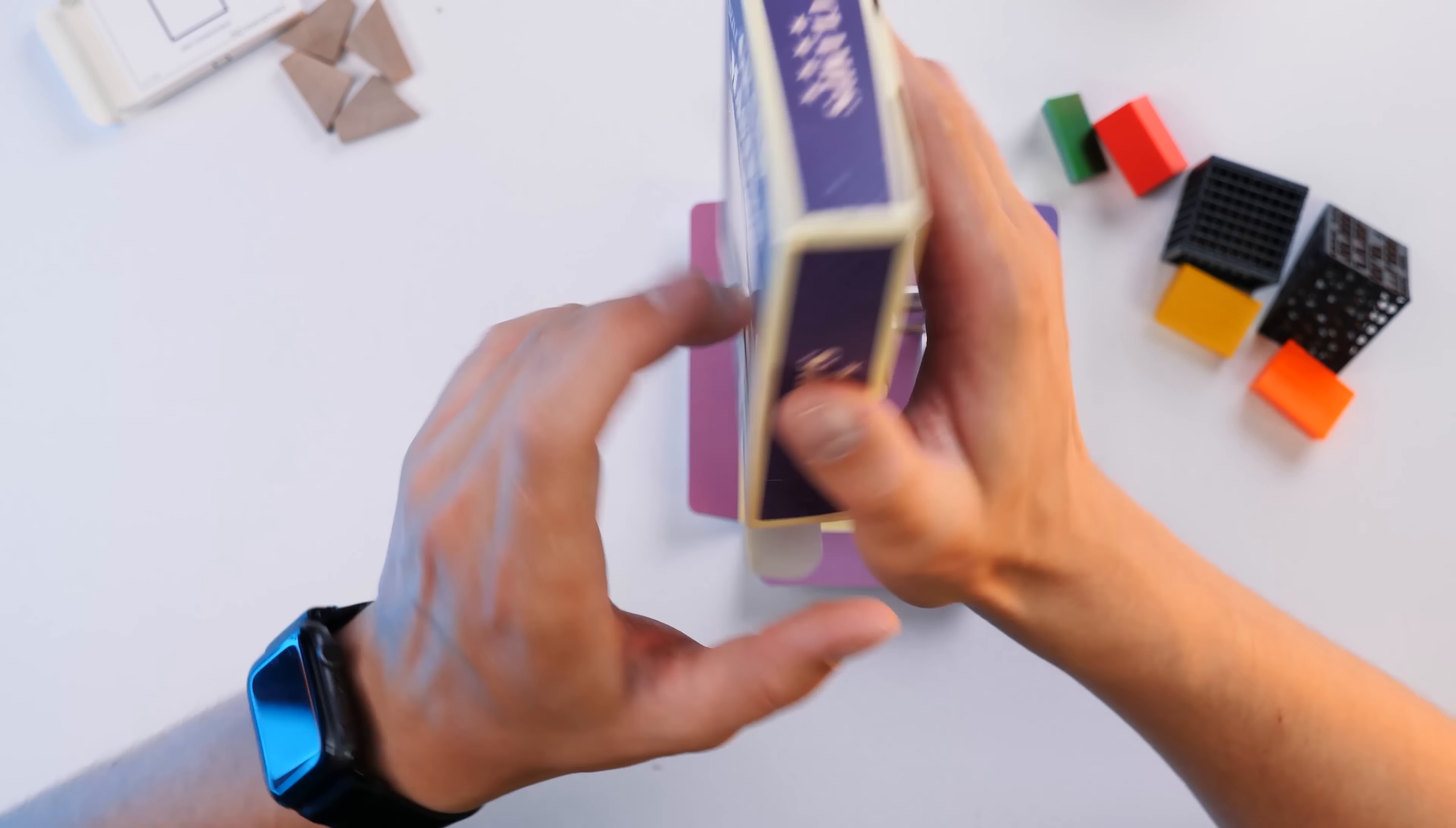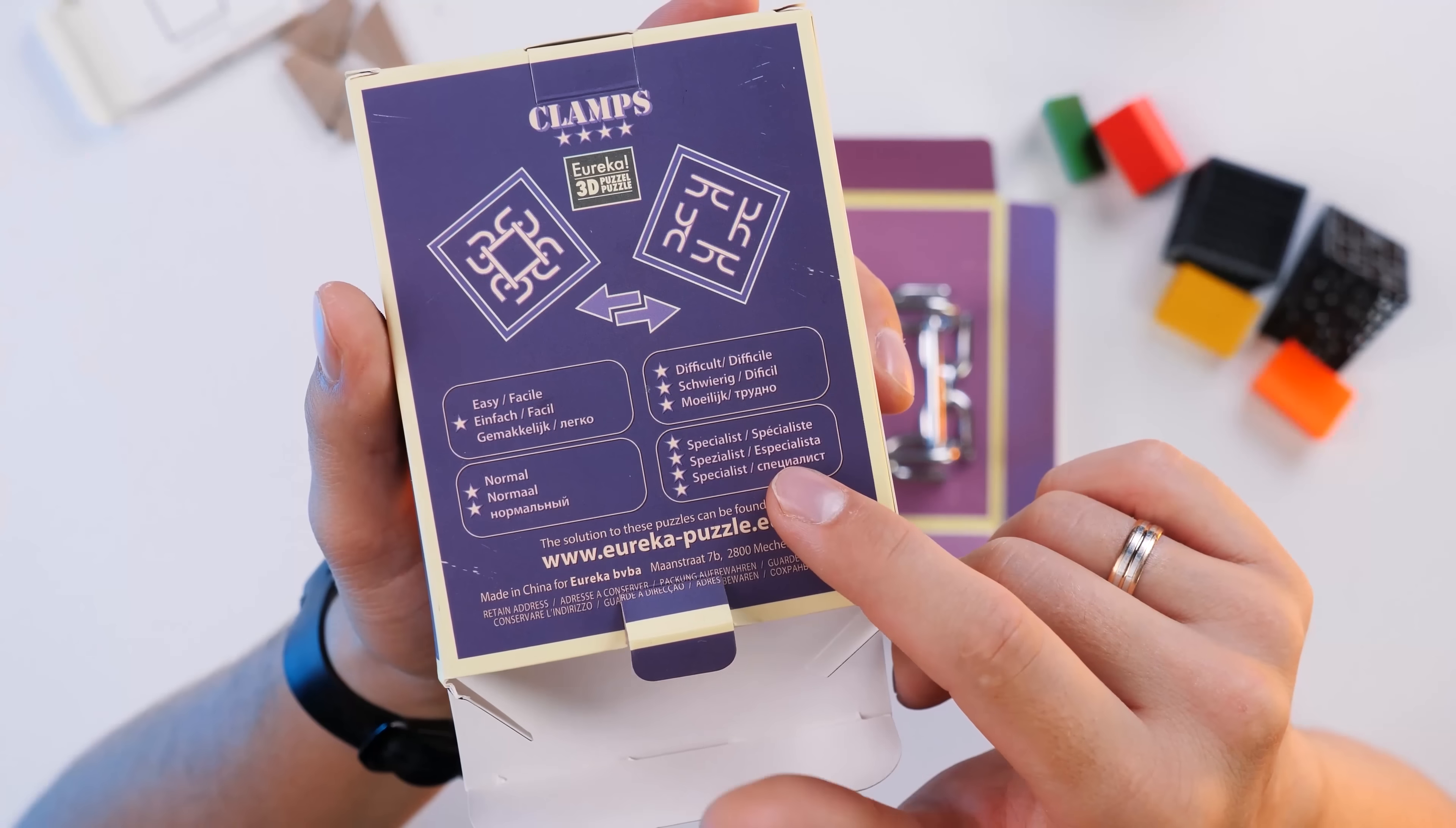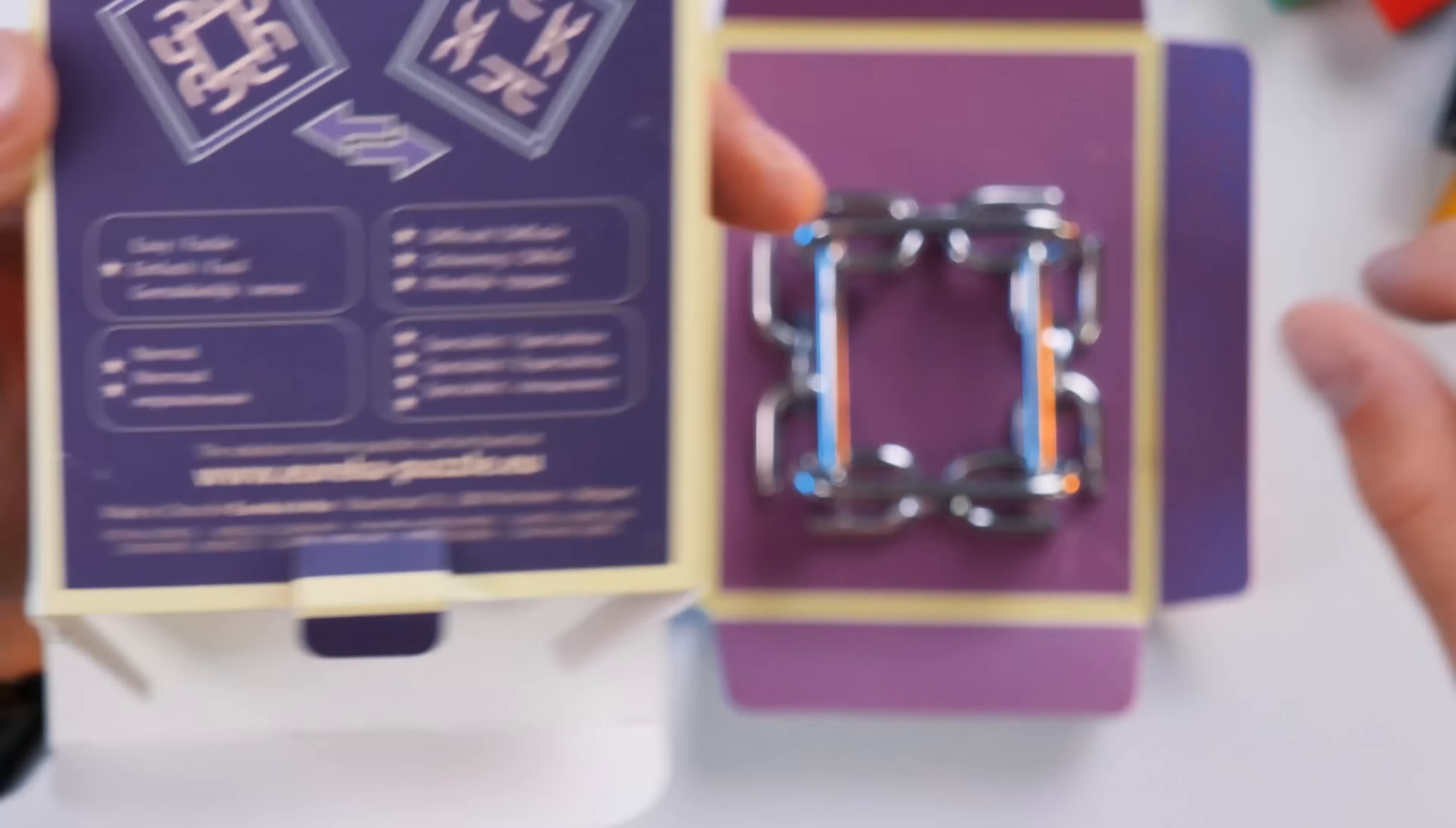Here we have four stars. And this is the biggest challenge in this series. There are four difficulty levels. Four stars is the biggest difficulty level. And our job is to make four separate pieces out of this intricate shape. From this to this. Let's first free up the puzzle.